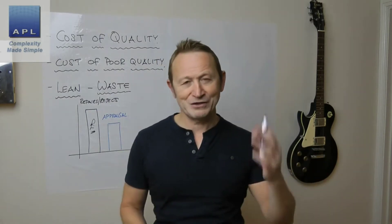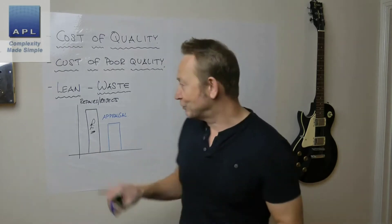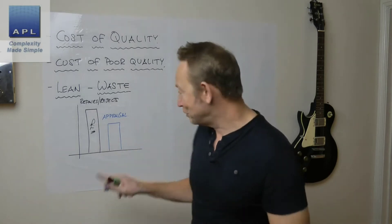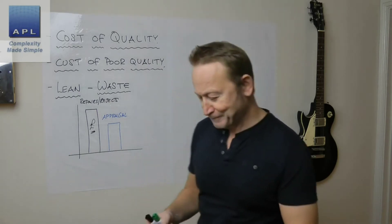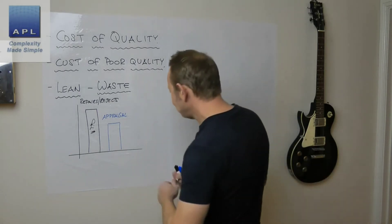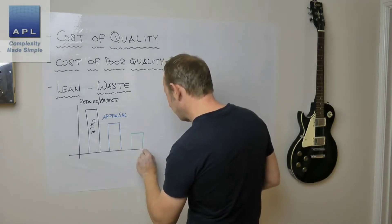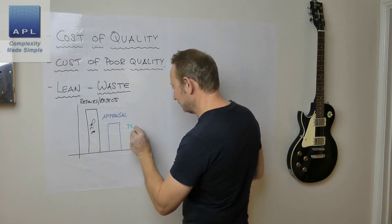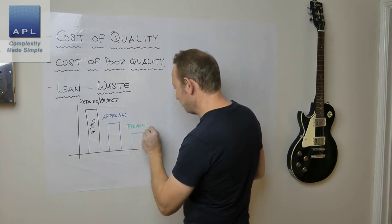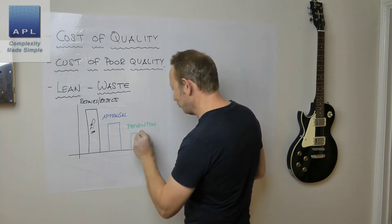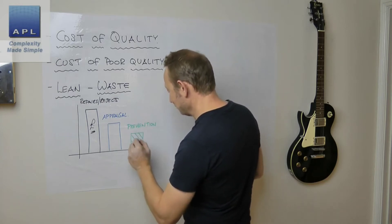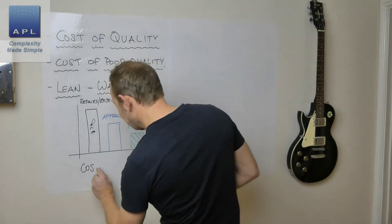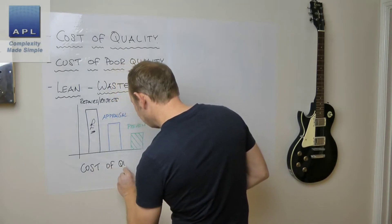Inspection doesn't prevent defects — it tends to find them. So the more you inspect, the more you find, and both columns stay big and costly. The appraisal cost is how much money you spend just checking stuff, because ultimately this is a sign you don't know what you're doing. If you knew what you were doing, you wouldn't have to inspect after you'd made it. Finally, the last category is prevention costs — how much money do you spend on prevention, making sure you get it right first time?